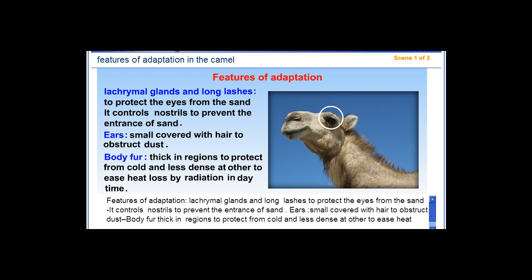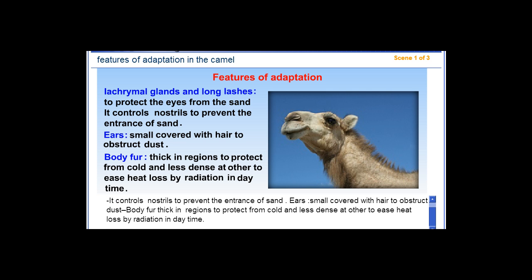Lacrimal glands and long lashes protect the eye from the sand. It controls nostrils to prevent the entrance of sand. Ears are small and covered with hair to obstruct dust. Body fur is thick in some regions to protect from cold and less dense at others to ease heat loss by radiation in daytime.